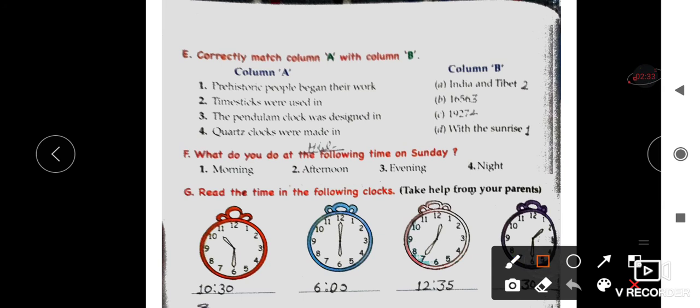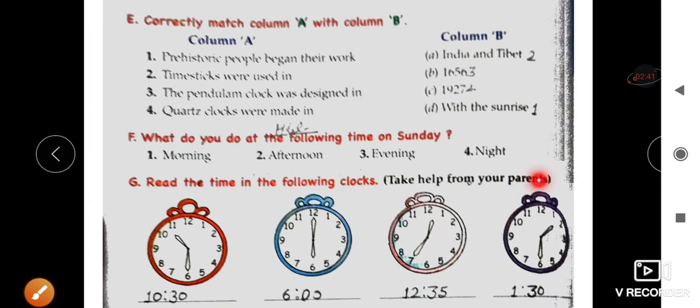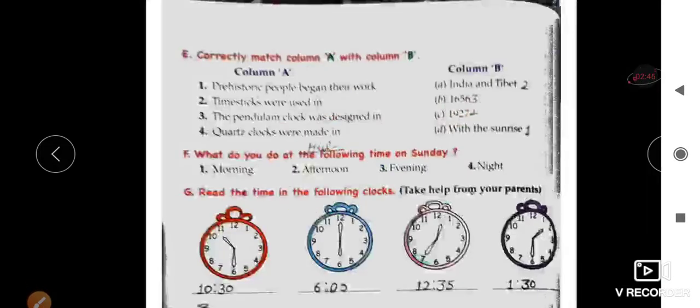Now Part G: Read the time in the following clocks. Take help from your parents. It is very easy - you can clearly and easily identify the time: 10:30, 6 o'clock, 12:35, and 1:30.